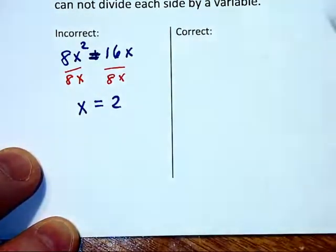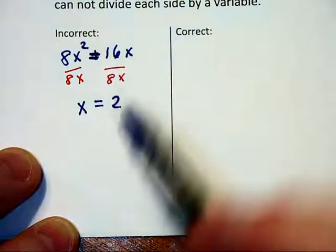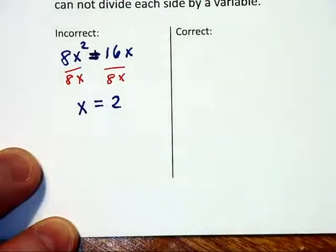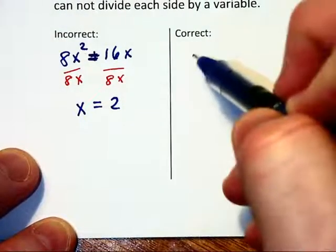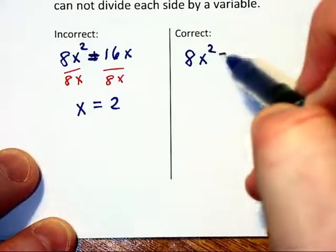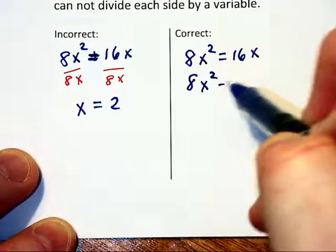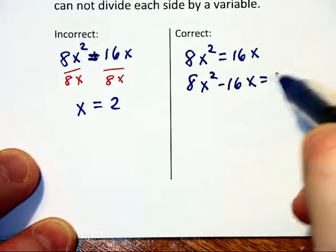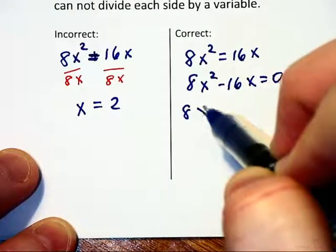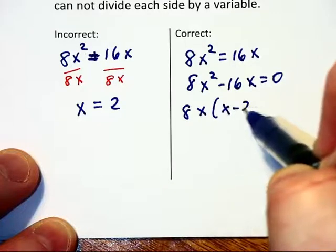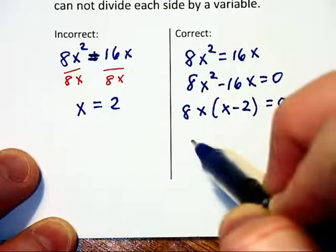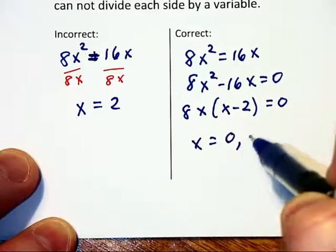Which only has one solution and there should be two answers because this is a quadratic equation. If, however, you took this 8x squared equals 16x and you set it equal to 0 as you're supposed to do for quadratic equations, you would then factor out the 8x and have x minus 2 equals 0 and you'd find that there are two solutions of 0 and 2.